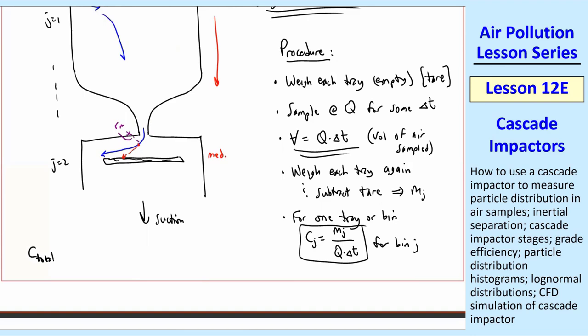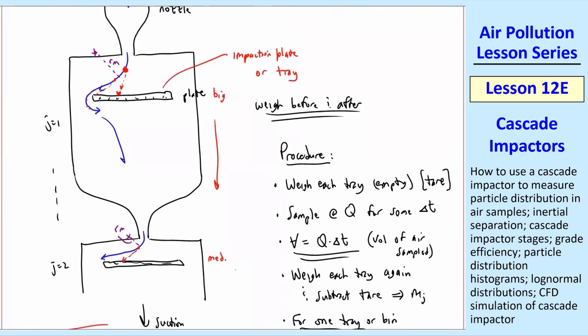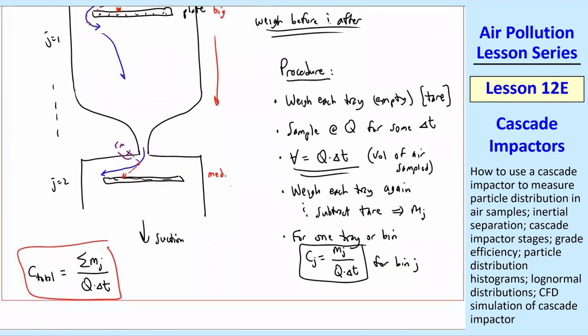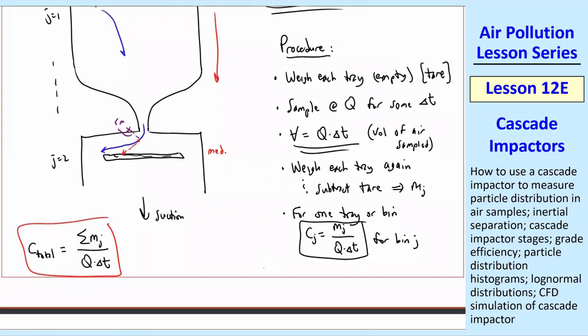Finally, if you want the total, C total is sigma MJ over Q delta T. Remember here, J is the tray number or the bin number, not the substance. We've dropped that J subscript. So that's how it works.